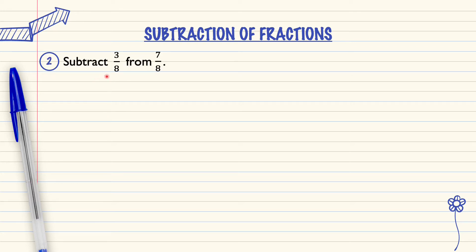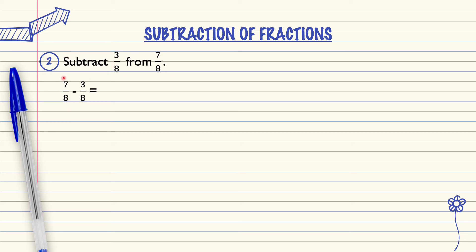Subtract 3 over 8 from 7 over 8. As we can see, the denominator is the same. So we can subtract the numerator.